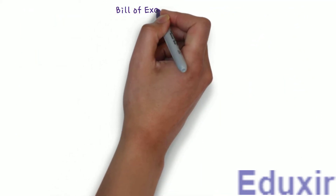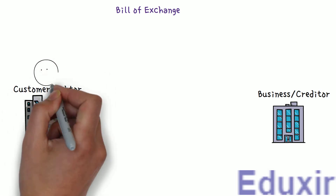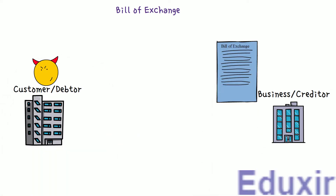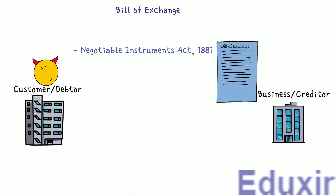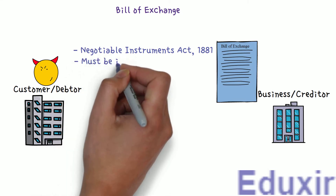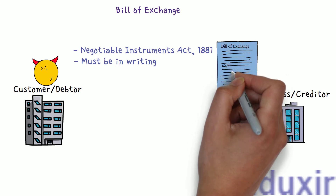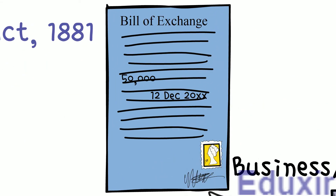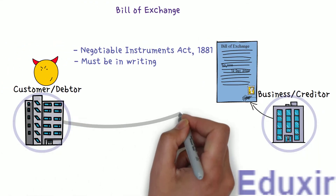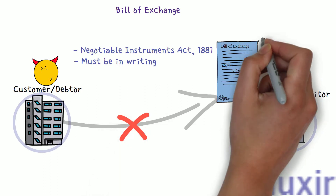Bill of exchange: When the business sells goods or services on credit, it needs some kind of surety so that debtors will not avoid payments. To avoid the risk of debtors defaulting, it sometimes depends on the bill of exchange, which is prepared as per the Negotiable Instruments Act 1881. Key features include: it must be in writing; the maker must sign it; the amount is payable either on demand or on the expiry of a fixed period; it must be stamped as per the requirement of law; and it must be accepted by the drawee, otherwise it is just a draft.